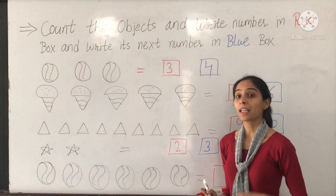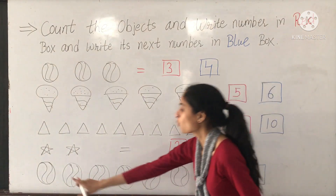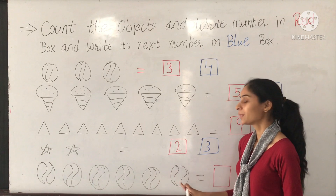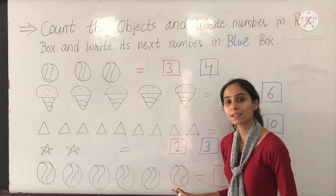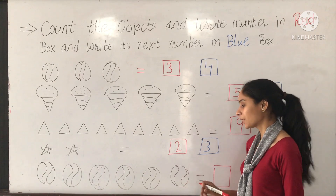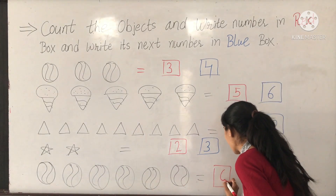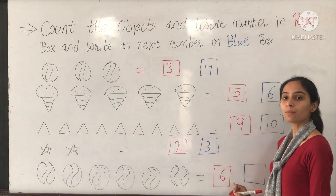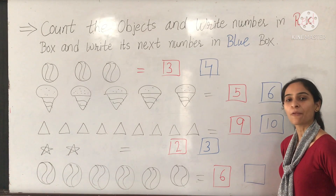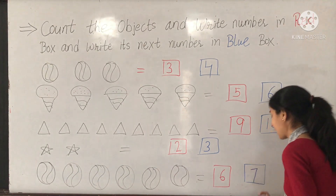Next again — balls. Count it. How many balls? 1, 2, 3, 4, 5, 6. How many balls are there? 6 balls. So in the red box we can write 6. And what comes after 6? 7. What comes after 6? 7. Very nice.